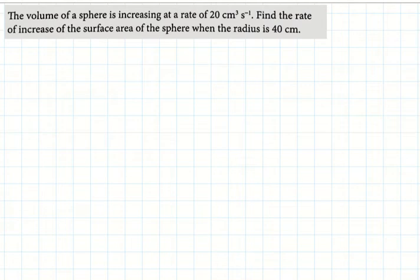The volume of a sphere is increasing at a rate of 20 cm³ per second. Find the rate of increase in surface area of the sphere when the radius is 40 cm.